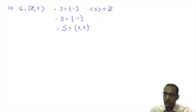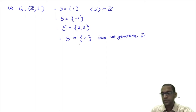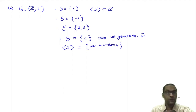Another example: I could take the two-element subset {2, 3}. This also generates Z, because once 2 and 3 belong to the subgroup, so does their difference 3 − 2 = 1, and once 1 is in a subgroup, all elements of Z belong. However, the singleton {2} does not generate Z — the smallest subgroup containing {2} is just the set of all even numbers, which is not equal to Z.